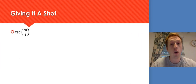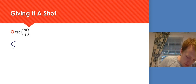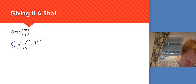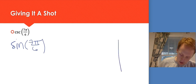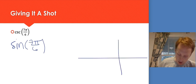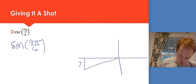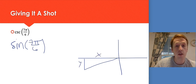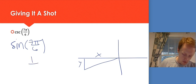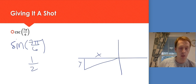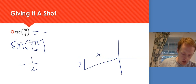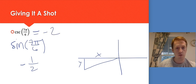Let's do cosecant of 7π/6. Cosecant tells me to find sine and then flip it. So I need sine of 7π/6 first. Think about 7/6 — a little bit bigger than 1, so it's in quadrant 3. The y value here is smaller, and since sine is the y value, I want the smaller number, which is 1/2. It should be negative because I'm below the x-axis. So sine of 7π/6 is negative 1/2. Cosecant means I take that and flip it — so the answer is negative 2.